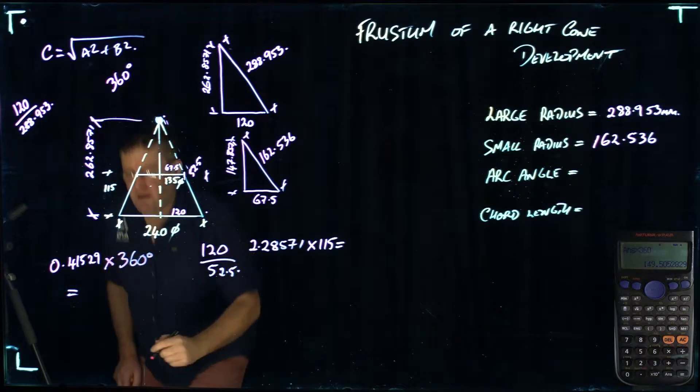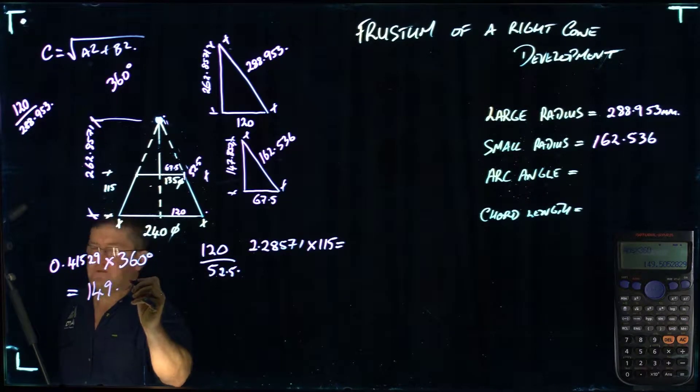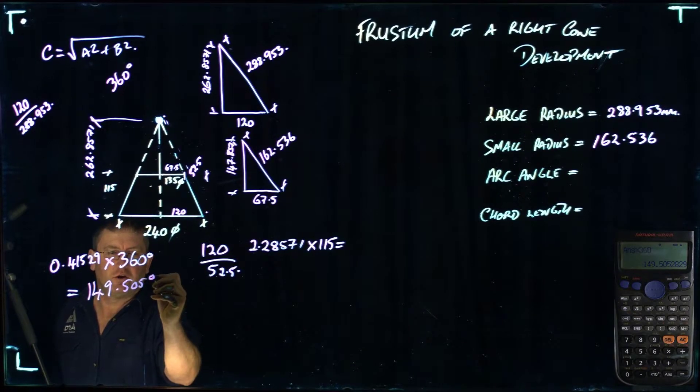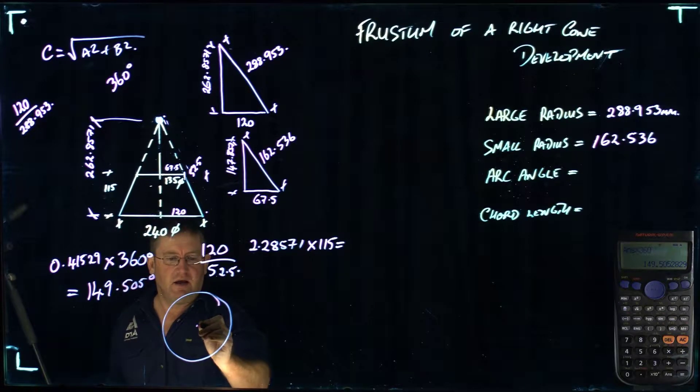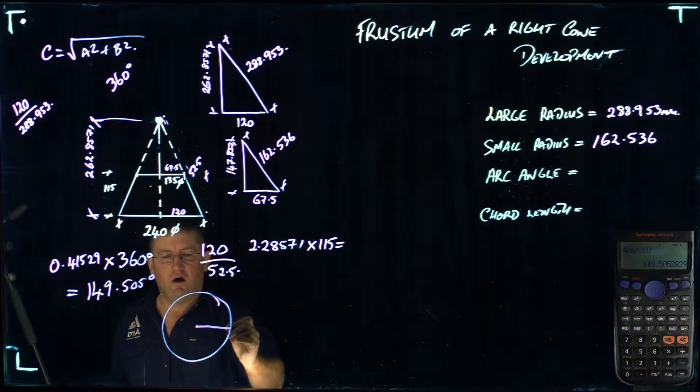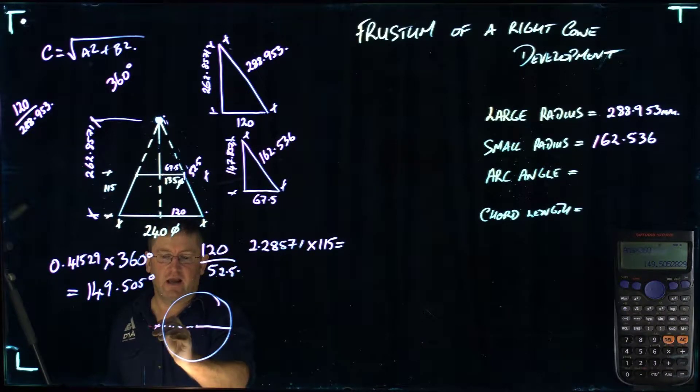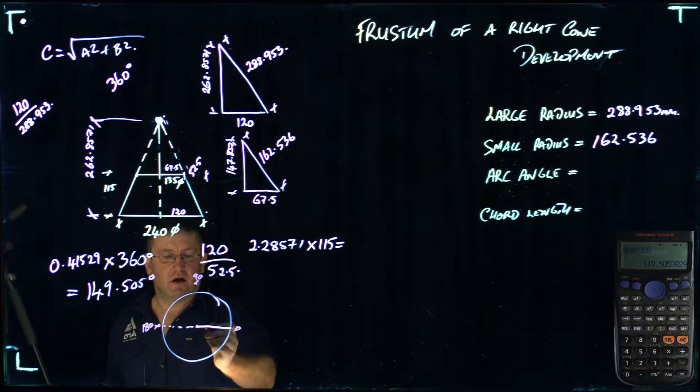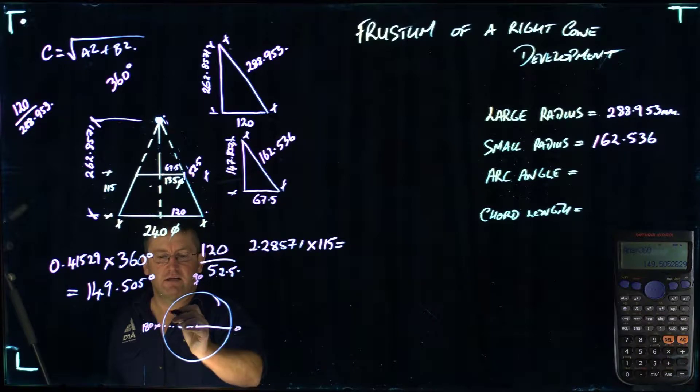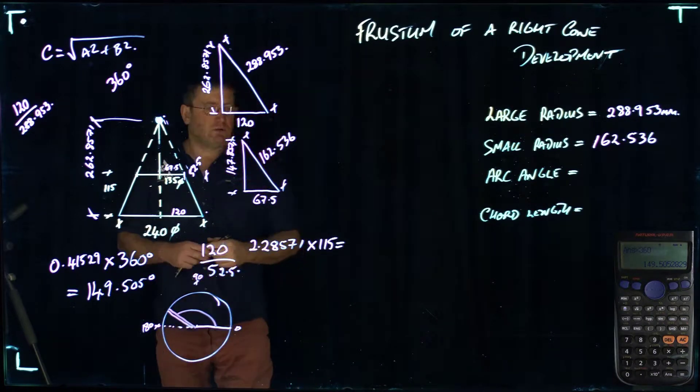It tells me that the angle is 149.505 degrees. So if I draw a full circle at 360 degrees and pick a start point, you can imagine directly opposite that line, this is 180 degrees at this point, if this is 0 with 90 being up here. So 149 degrees is somewhere in this portion in here. That's going to be roughly 149 degrees.